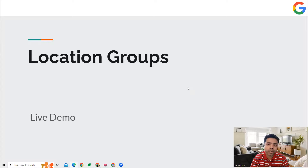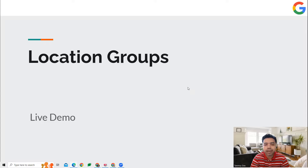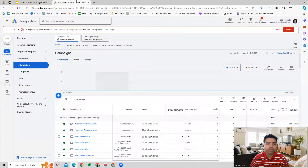In order to create a location group, the basic requirement is that we are able to set up location extensions inside our Google Ads platform, or we are making use of the affiliate location extensions on the platform. You need to have your Google My Business or Google Business Profile account linked to your Google Ads, and only then we can go ahead and make use of this feature.